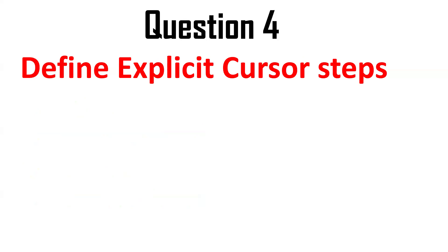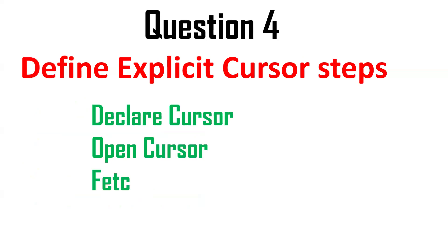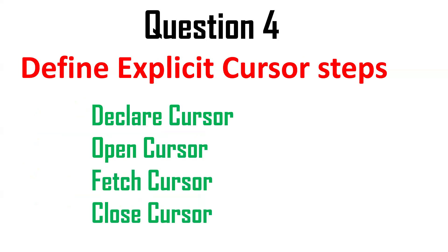The next question is: how do you define an explicit cursor? The steps are: declare the cursor, open the cursor, fetch the cursor, and close the cursor. The declaration happens in the declaration section. The remaining steps — open, fetch, and close — happen in the execution section. We declare the cursor with a SELECT statement, then open it, fetch the results and store them into respective variables, process them, and then close the cursor.